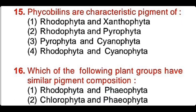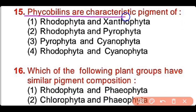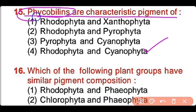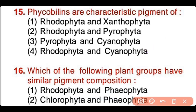Question number 15: Phycobilins are the characteristic pigments of rhodophyta and xanthophyta, rhodophyta and pyrrophyta, pyrrophyta and cyanophyta, or rhodophyta and cyanophyta? The correct answer is option 4. Rhodophyta as well as cyanophyta have phycobilin pigments.